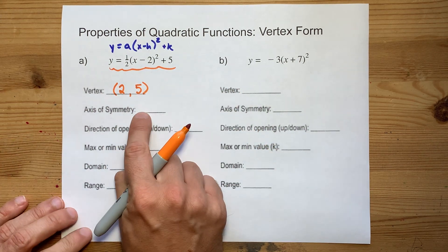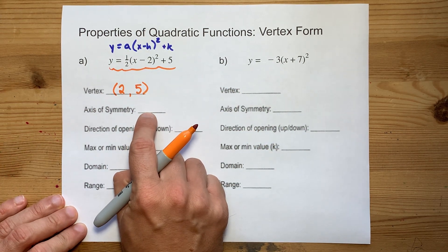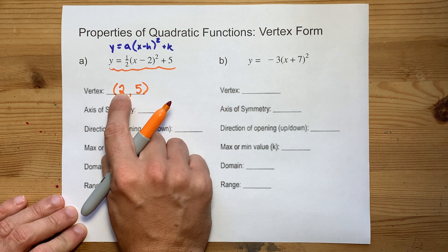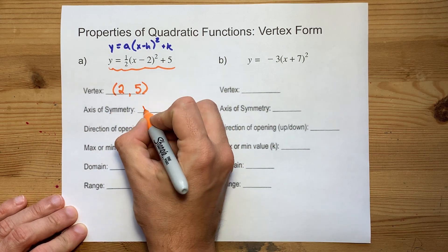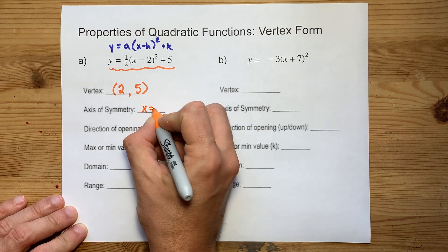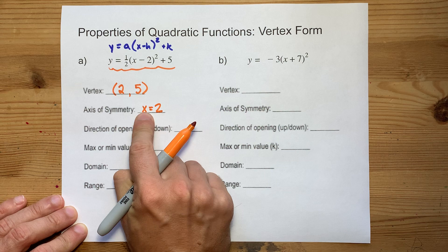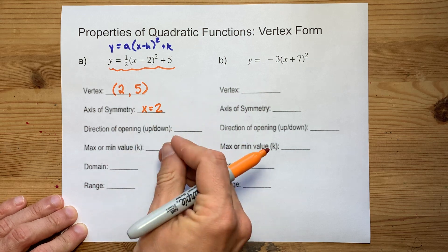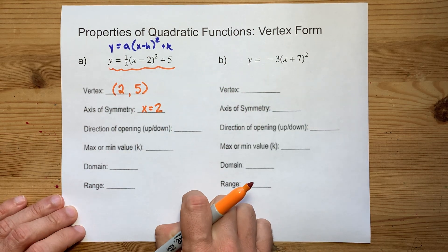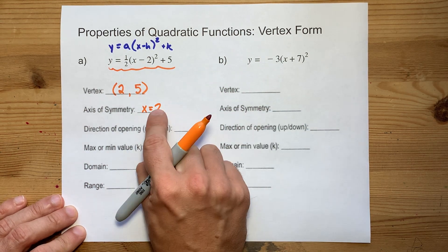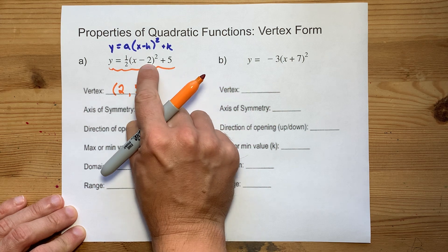The axis of symmetry is always based off of the x-coordinate of the vertex. Here it is x equals 2. You have to write 'x equals' — it's worth half a mark in my class. Note that that 2 is the same as that 2.